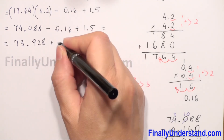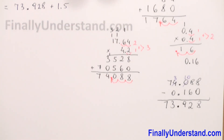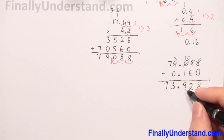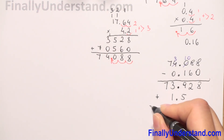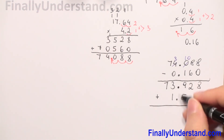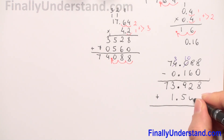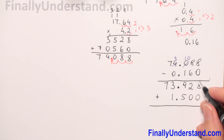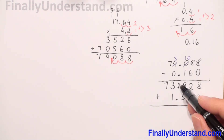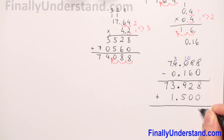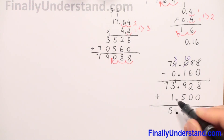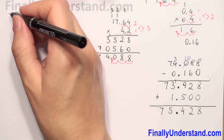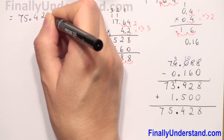Now we add 1.5 to 73.928. We keep decimal points aligned and fill empty spaces with zeros. 8 + 0 = 8; 2 + 0 = 2; 9 + 5 = 14, write 4 carry 1; bring down decimal point; 3 + 1 + 1 (carry) = 5; bring down 7. So the final solution is 75.428.